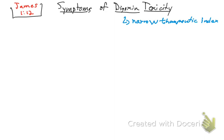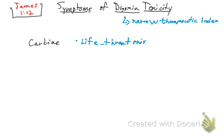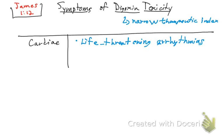There are different symptoms that we're going to see right now. These are the symptoms in different systems. For example, in the cardiac system, you can see life-threatening arrhythmias. So let's organize this like a table to make it more interesting.